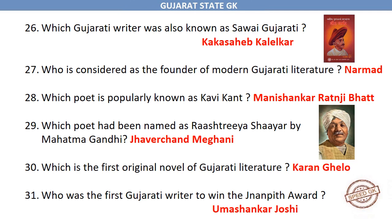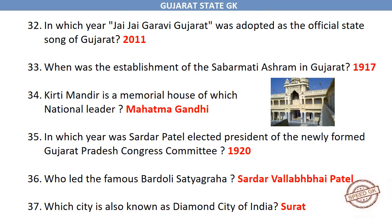Who was the first Gujarati writer to win the Jnanpith Award? Umashankar Joshi. In which year was 'Jai Jai Garvi Gujarat' adopted as the official state song of Gujarat? 2011. When was the Sabarmati Ashram established in Gujarat? 1917. Kirti Mandir is a memorial house of which national leader? Mahatma Gandhi.